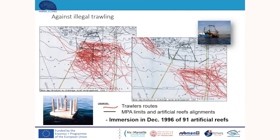To conclude, the Cap Couronne Reserve situated in the northern part of the Bay of Marseille illustrates physical protection measures. Trawlers in red were regularly entering the reserve area until anti-trawling artificial reefs were immersed in 1996, showing there are also physical ways to prevent poaching.